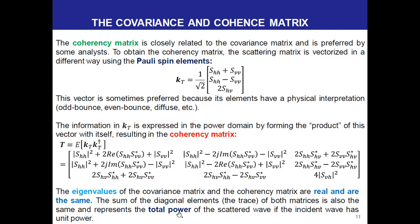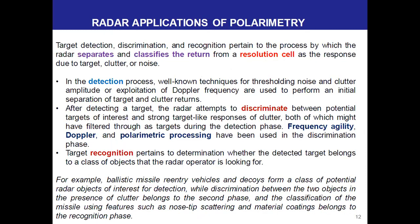Some applications include target detection, discrimination, and recognition — the process by which we separate and classify returns from a resolution cell due to target, clutter, and noise. In the detection process, well-known techniques are used to separate the target from clutter returns. Once detected, we can discriminate between potential targets of interest and target-like clutter responses. Finally, the recognition step allows us to classify different targets.